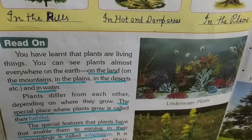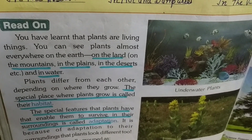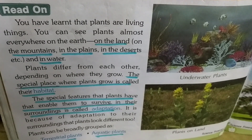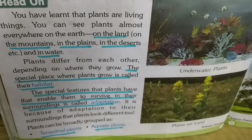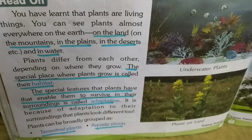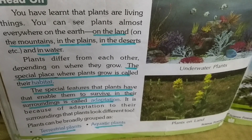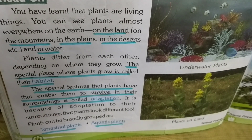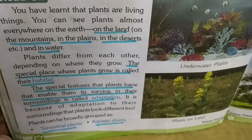Plants differ from each other depending on where they grow. The special place where plants grow is called their habitat. The special features that plants have that enable them to survive in their surroundings is called adaptation. It is because of adaptation to their surroundings that plants look different.